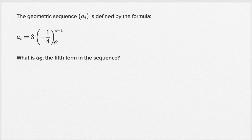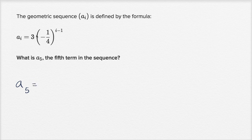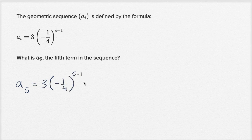All right, we can just use this formula. A sub five is going to be — everywhere I see an i, I replace it with a five — so it's equal to three times negative one-fourth to the five minus one power. That's equal to three times negative one-fourth to the fourth power.